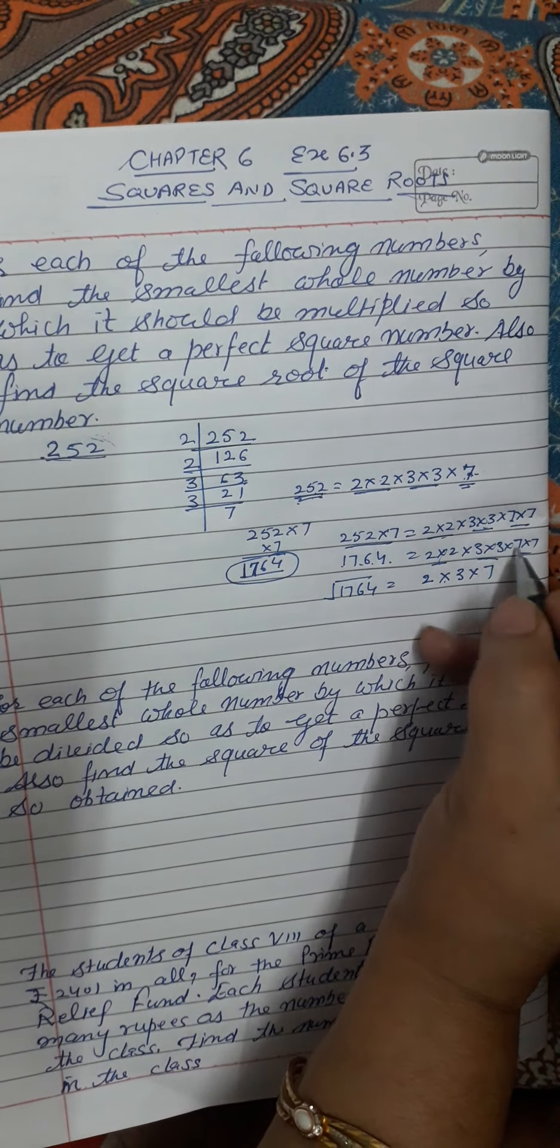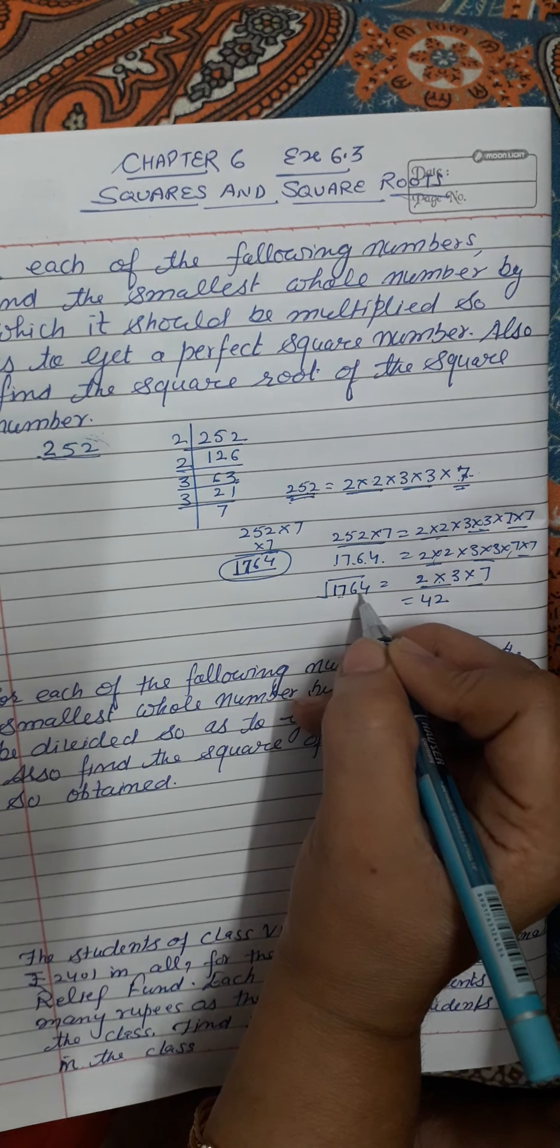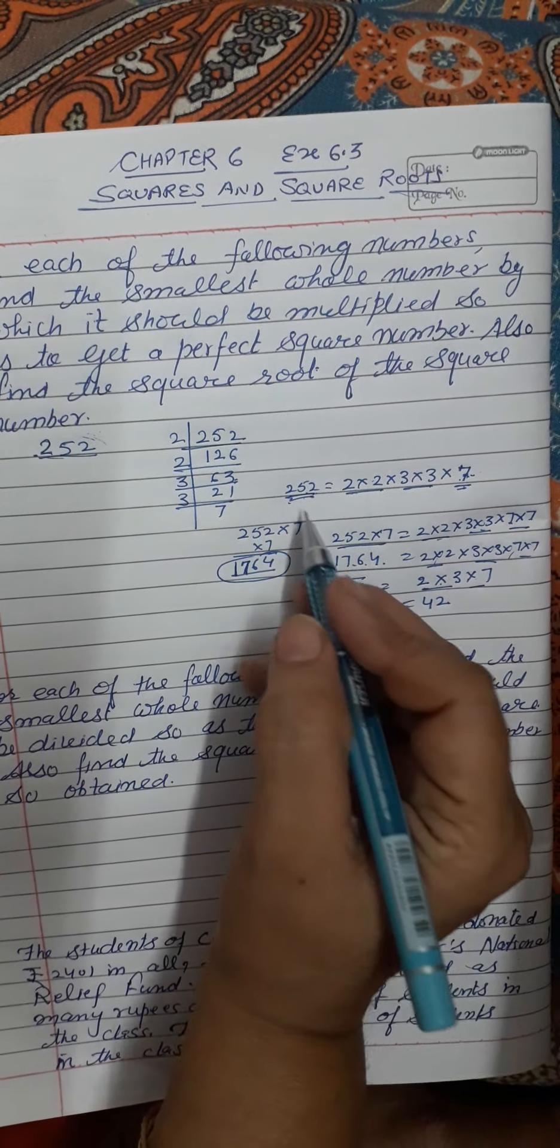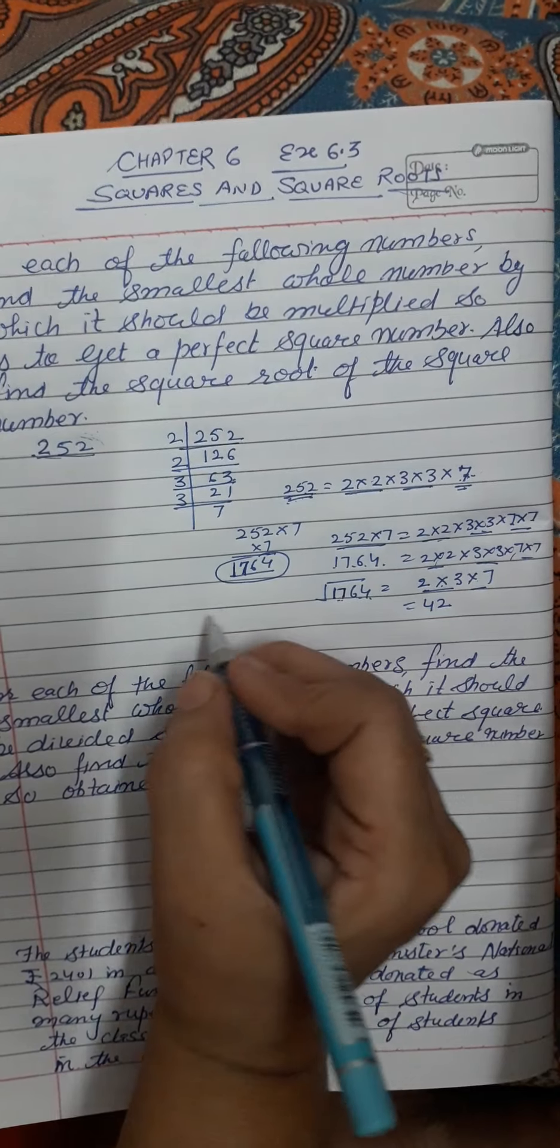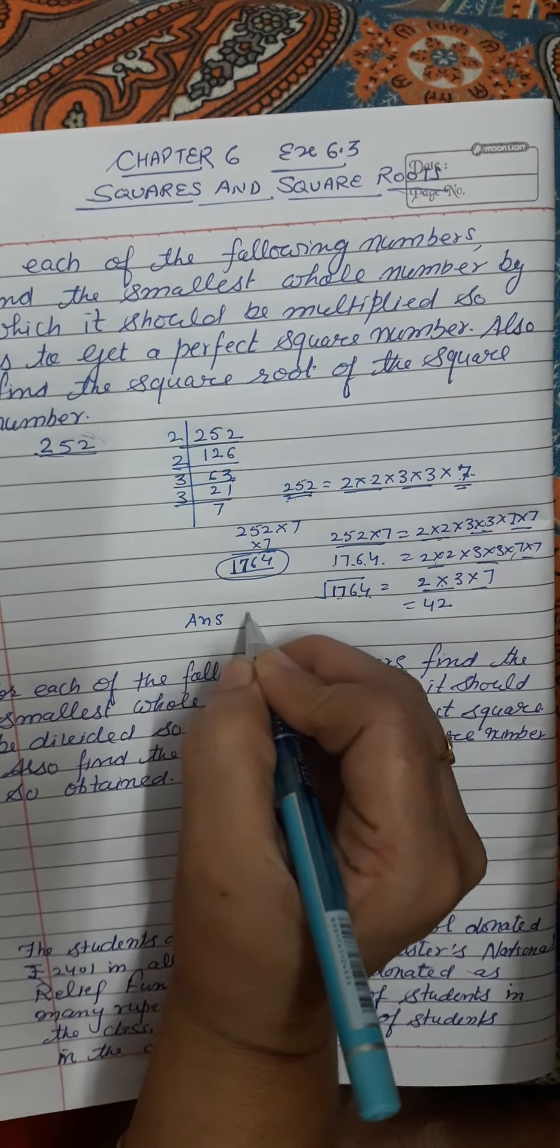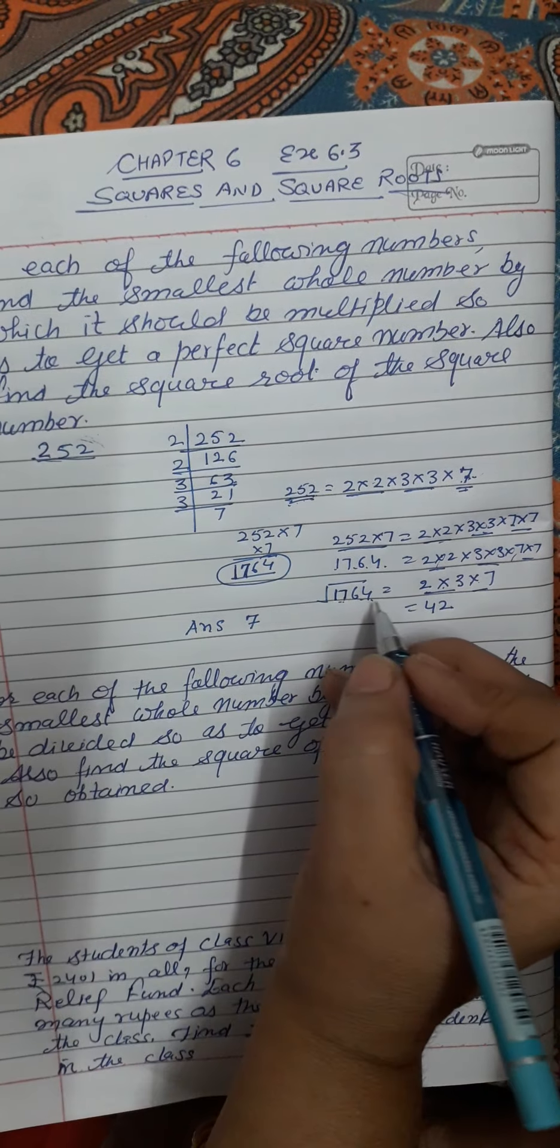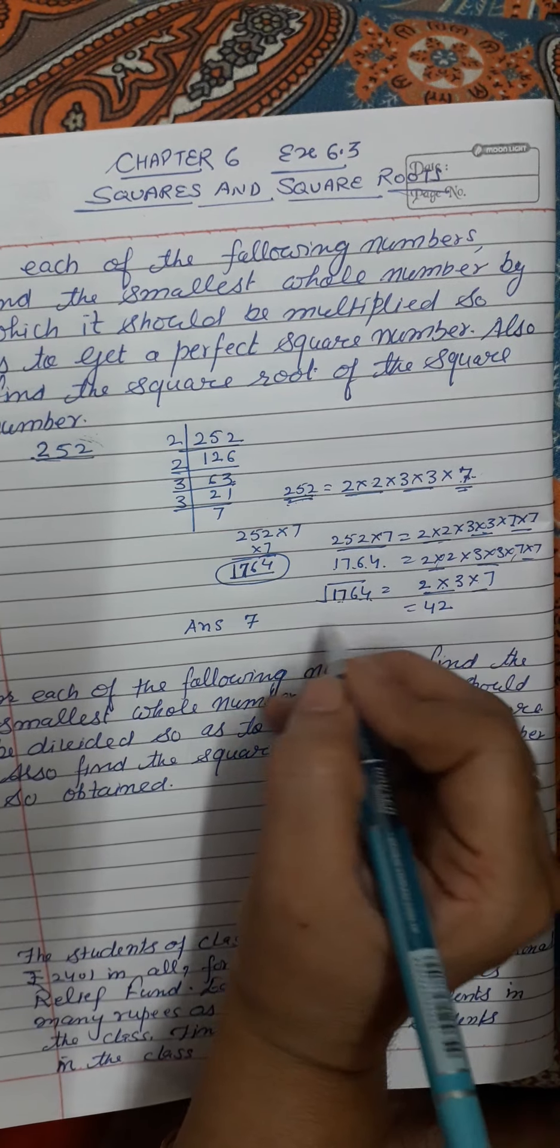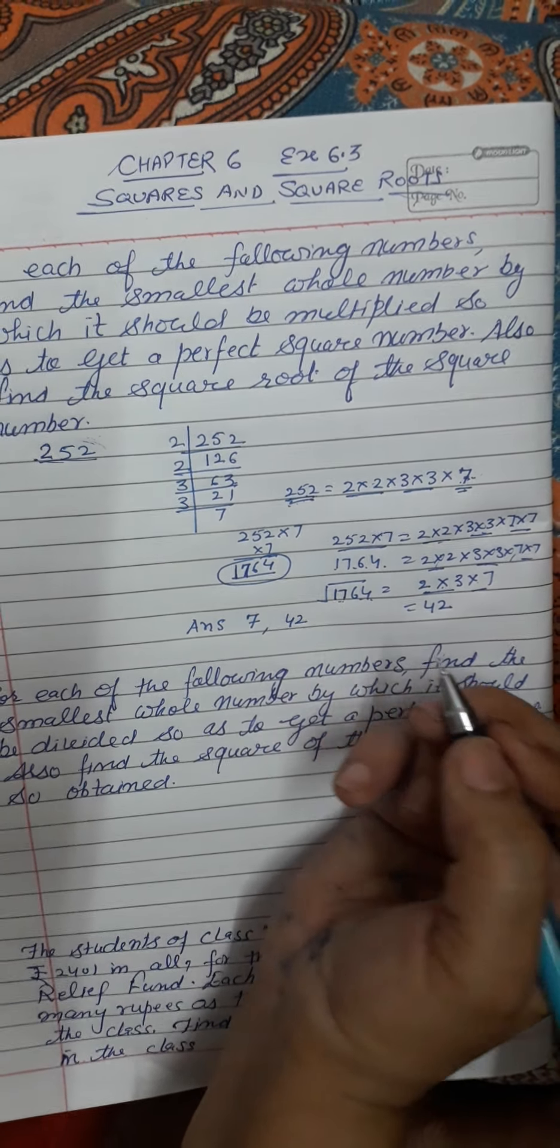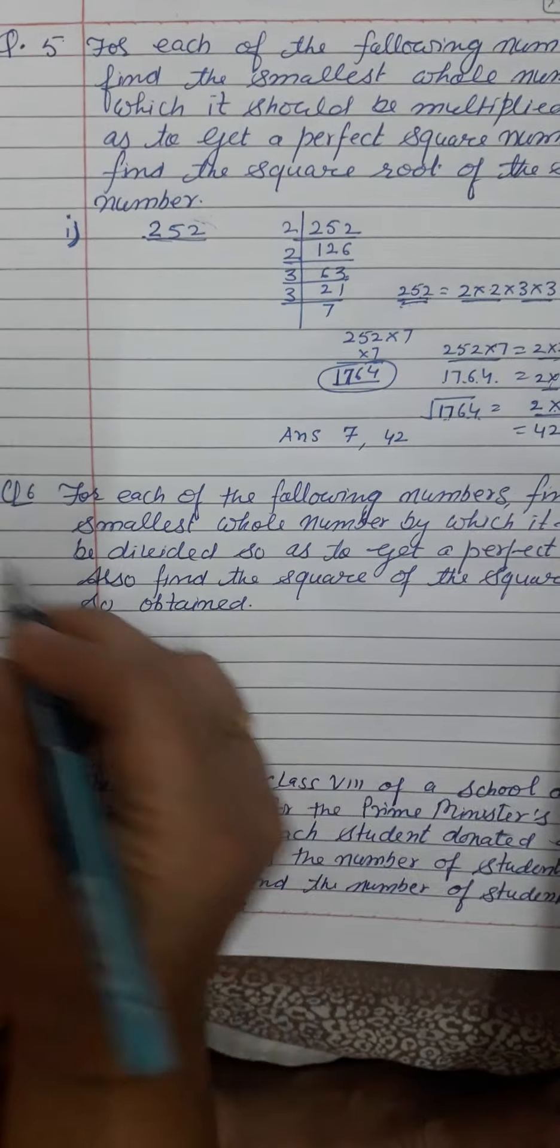So the number which is a perfect square is 1764, and the square root is 42. That means we had to multiply 252 by 7 to make it a perfect square. So we have two answers: one answer is 7, which is the number we multiply to make a perfect square, and the square root of that perfect square number is 42. So this is question number 5, this is the first part, and all the other parts you can do in the same way.